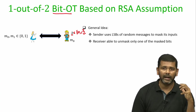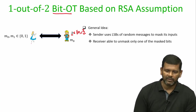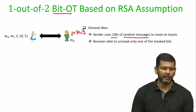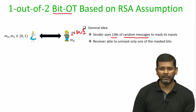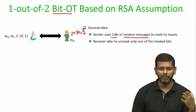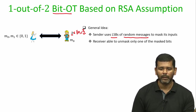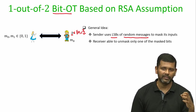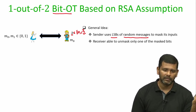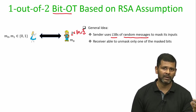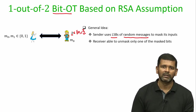The general idea of the protocol is the following: Alice, the sender, will use the LSBs of some random messages to mask her inputs M0 and M1. For M0 she picks the LSB of one random message, and for M1 she picks the LSB of another random message, and communicates the masked versions to Bob. Bob will have a mechanism to unmask only the message with index B, but will not be given sufficient information to unmask the other message.